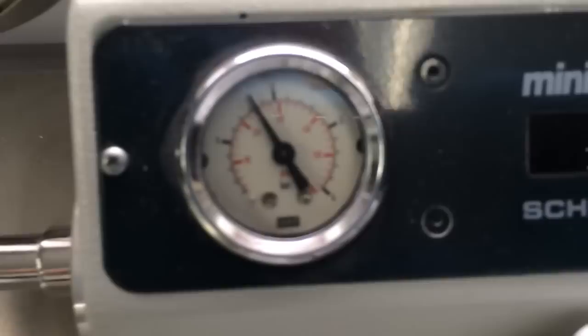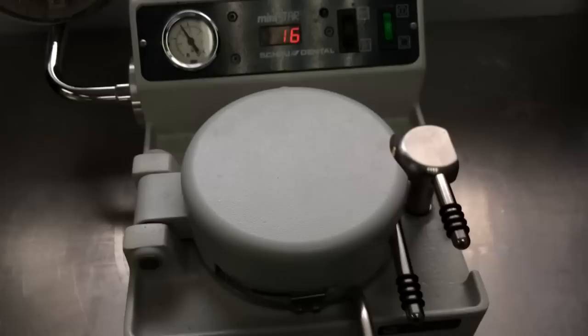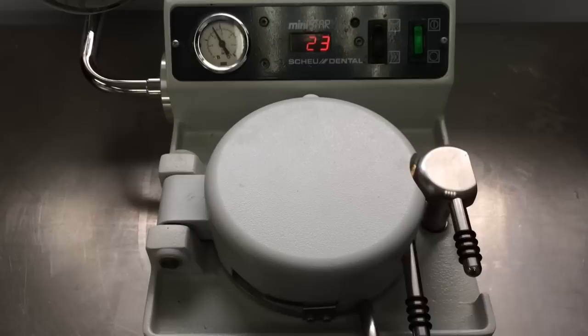it's putting about 25 pounds per square inch of pressure on the mouth guard blank that's inside there. And what that's doing is that's forcing all of that softened material all around the model. And so that's what forms it around the teeth.